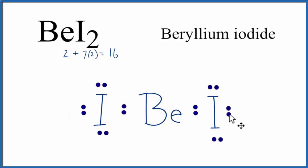The iodine atoms, they have an octet, both of them. And then the beryllium in the center, it only has 4 valence electrons. Beryllium, that's an exception to the octet rule. It only needs 4 valence electrons. So this is the Lewis structure for BeI₂.